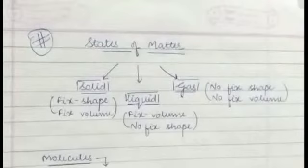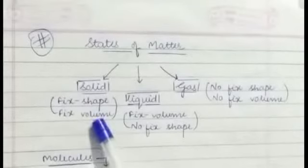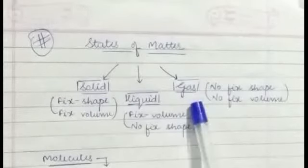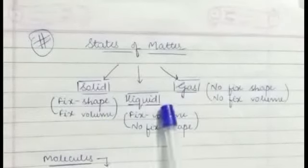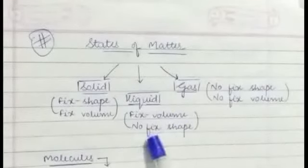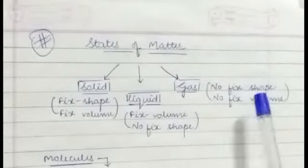Hi guys, in this video we will study the chapter states of matter. So we have three states of matter: solid, liquid, and gas. Solid ki hamaar paas fixed shape, fixed volume hoti. Liquid ki fixed volume to hoti hai but fixed shape nai hoti. Gas ke case mein hamaar paas na toh fixed shape hoti hai nahi fixed volume hoti hai.